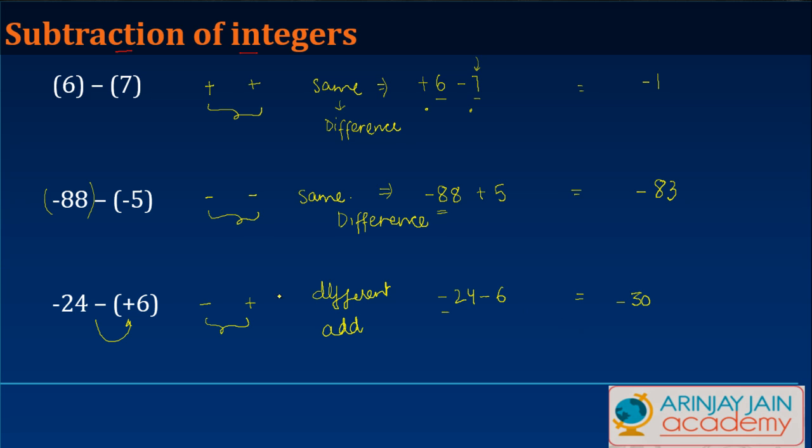So if the signs are different, you add the numbers and give it the common sign. If the signs are same, you find out the difference between the two numbers, whether it is both negative or both positive. You find out the difference in both numbers and give the sign of the larger number, which is -88 in this case and 7 in the 6 and 7 case.